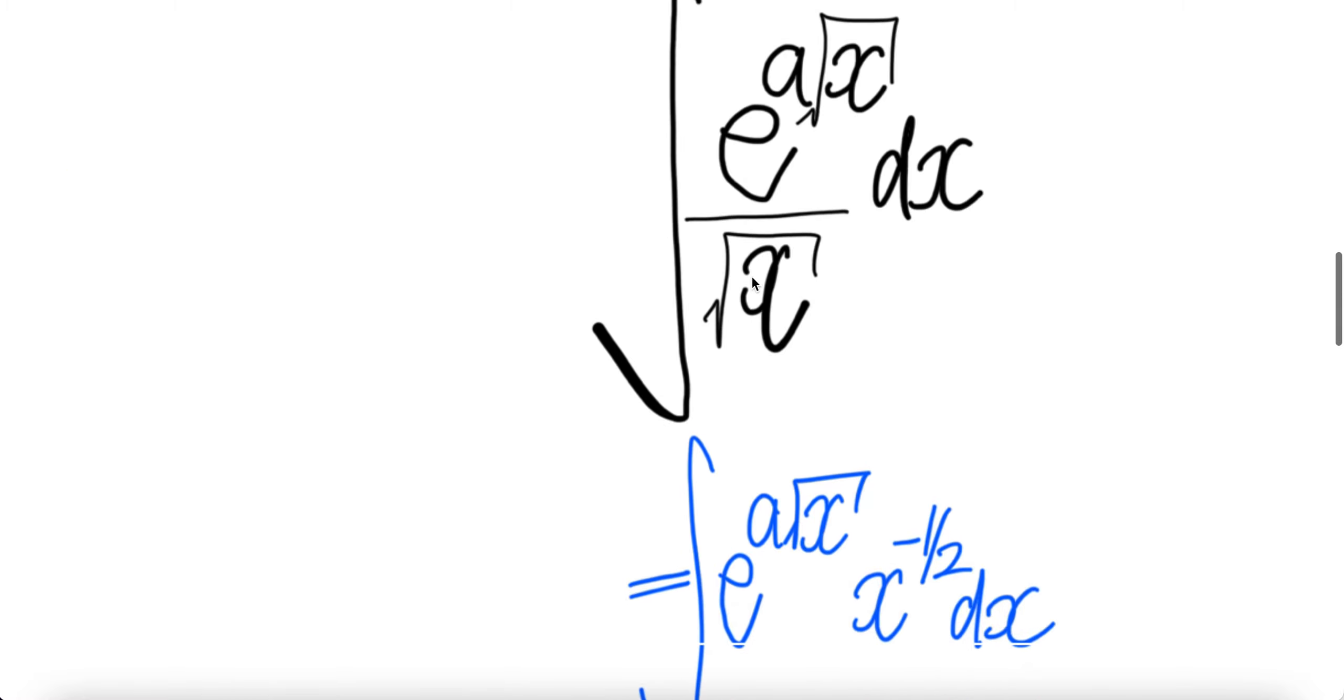Now we're going to write this 1 over square root x as x to the power of negative half. Negative is because 1 over and half is because of the square root.